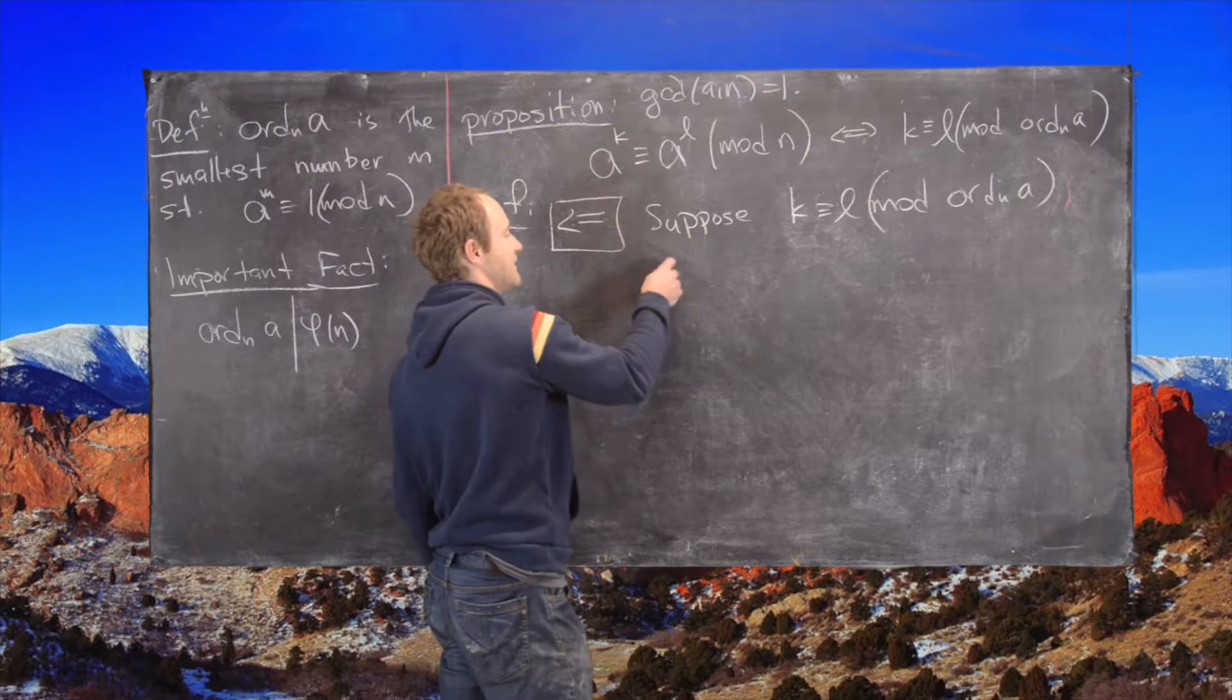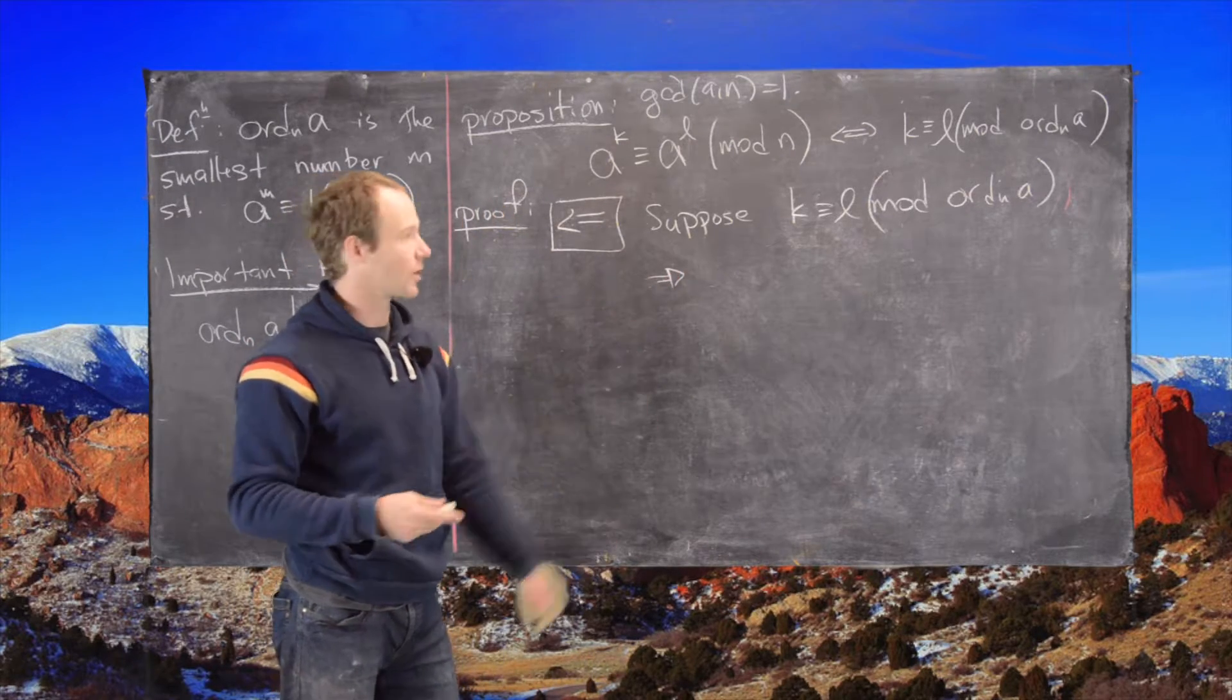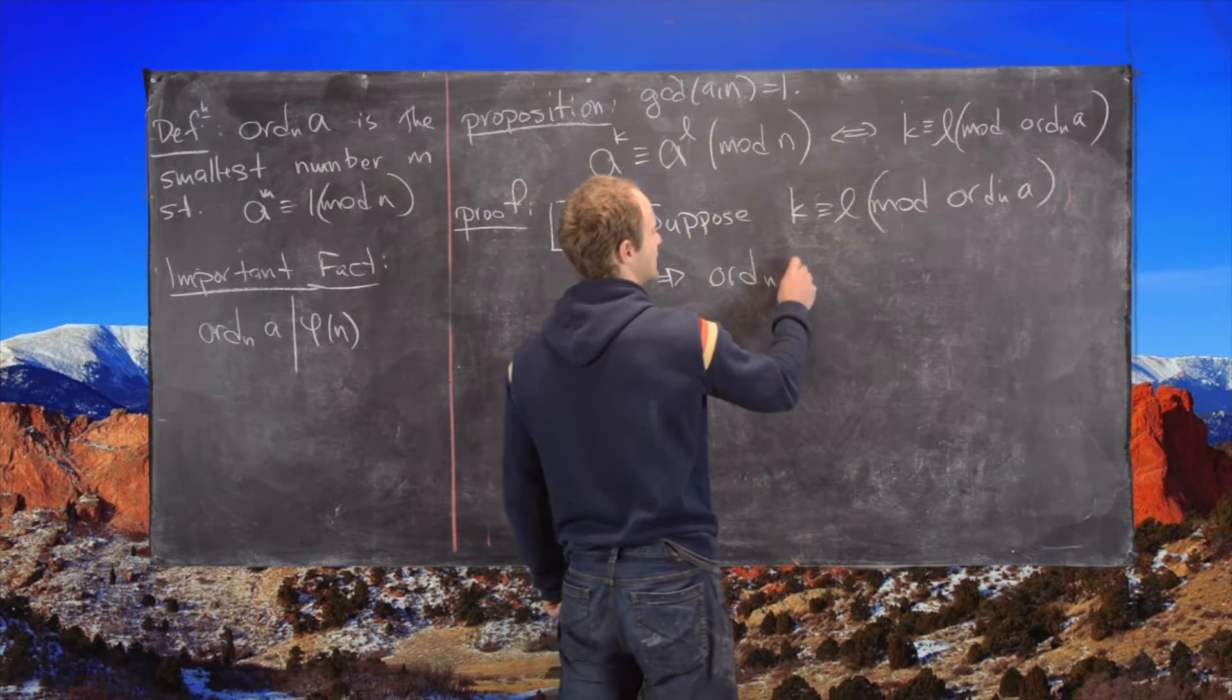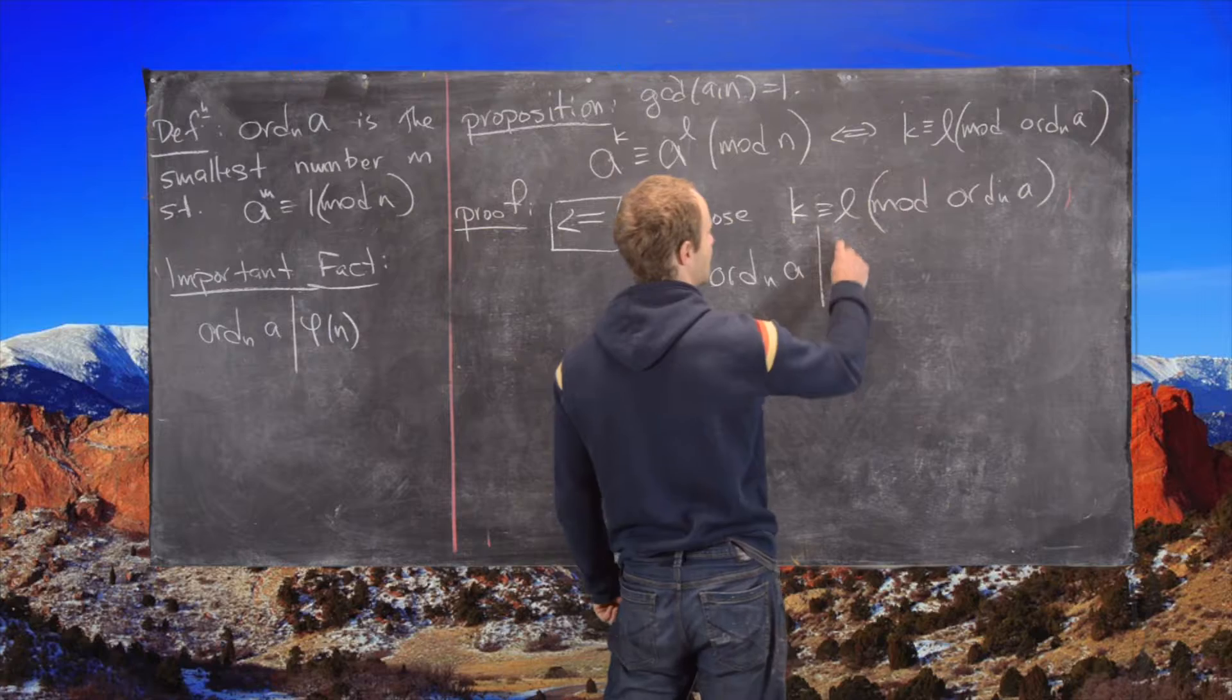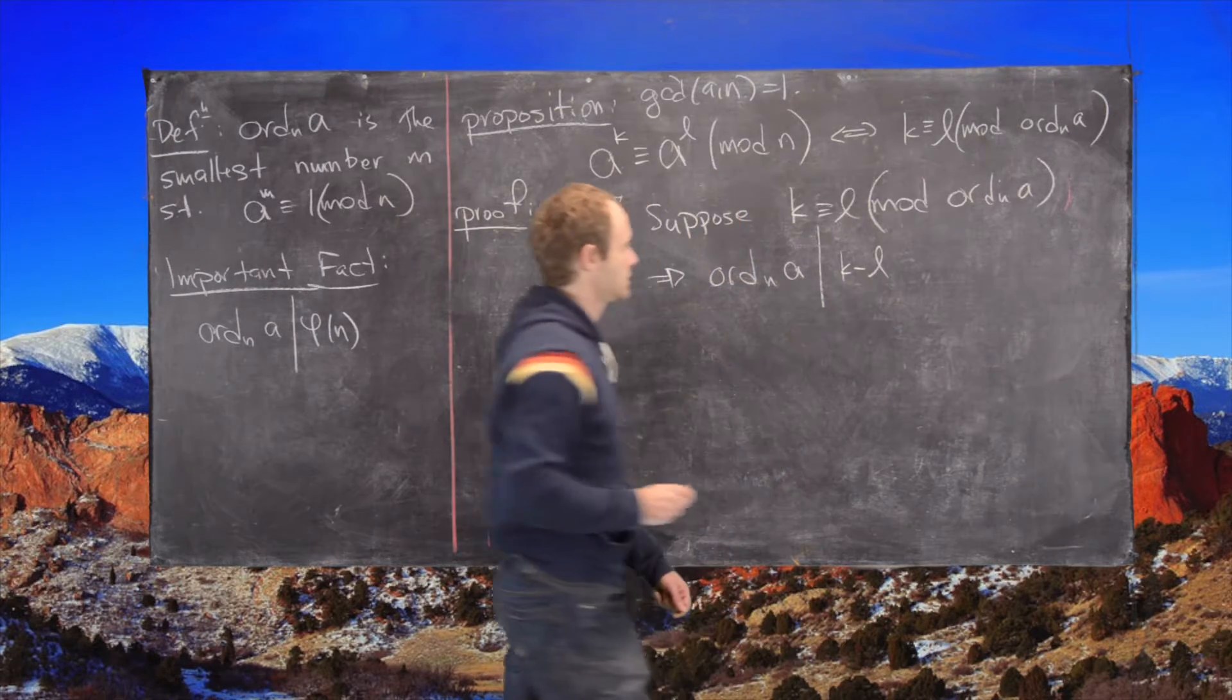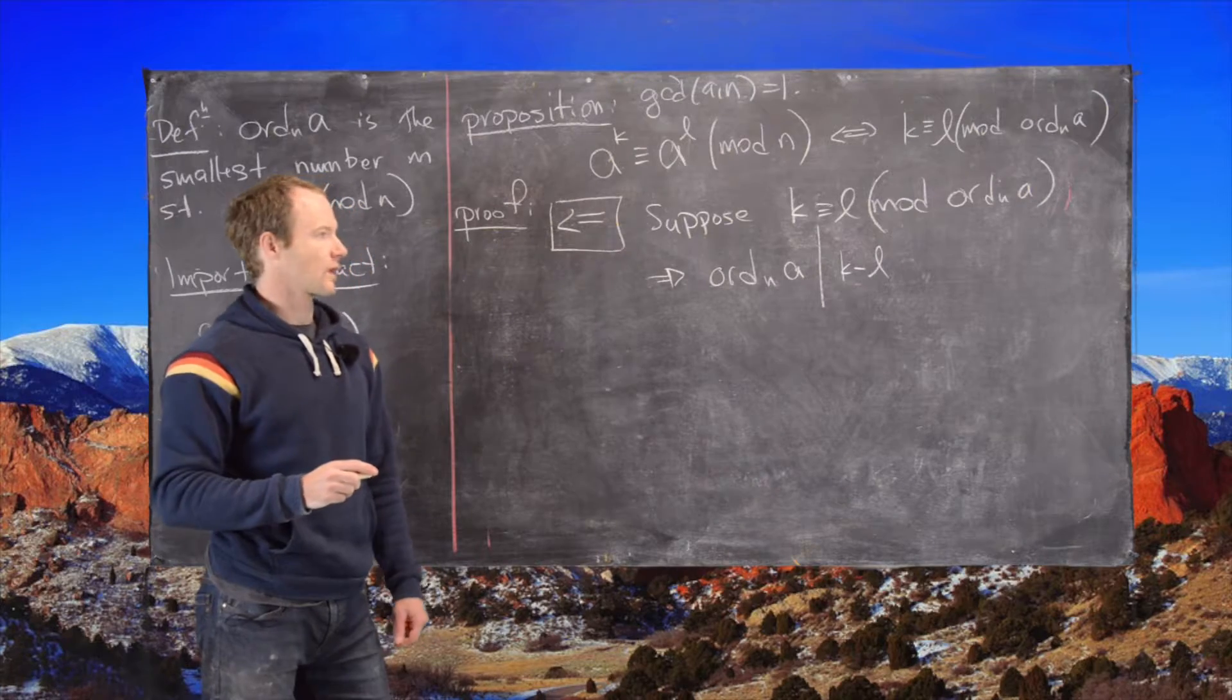But by the definition of equivalence modulo the order, we get that that means that the order modulo n of a divides k minus l. Okay, good.